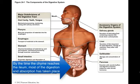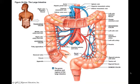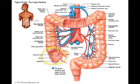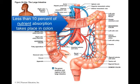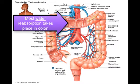By the time chyme reaches the ileum, the final segment of the small intestine, most chemical digestion and nutrient absorption has taken place. The chyme continues through the ileum to the cecum of the large intestine, passing through the ileocecal valve. The cecum collects and stores material from the ileum and begins compaction. The vermiform appendix is attached to the cecum and helps with the lymphoid system as a component of the immune system. In the large intestine (colon), less than 10% of nutrient absorption takes place, but most water reabsorption occurs here, compacting material into feces for elimination.